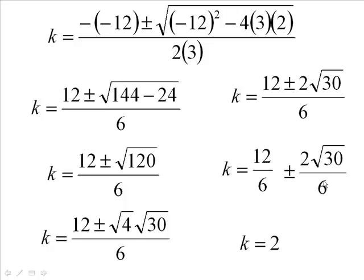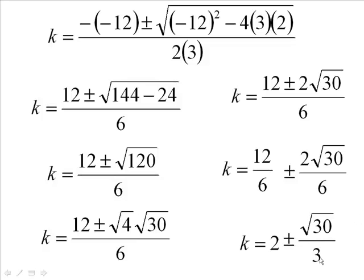The 2 over 6 is the same thing as 1/3. You can divide this by 2 and this by 2. You get 1 times the square root of 30, which is √30. And 2 goes into 6 three times. We cancel the 2 and 6, we get 1/3. So k = 2 ± (√30)/3. And that's solving it for k.